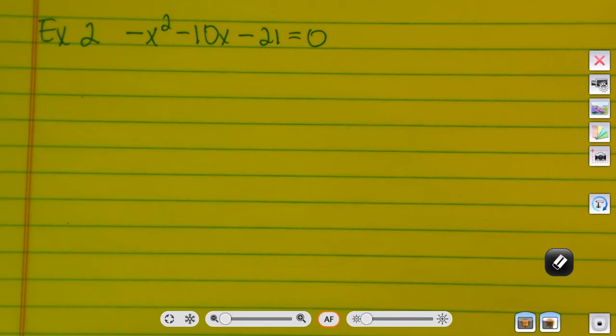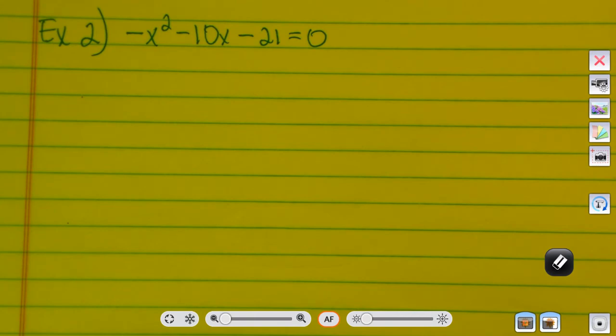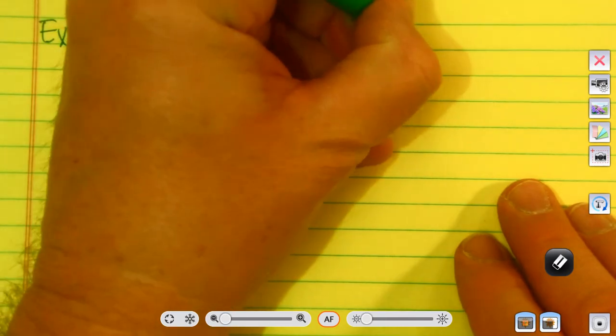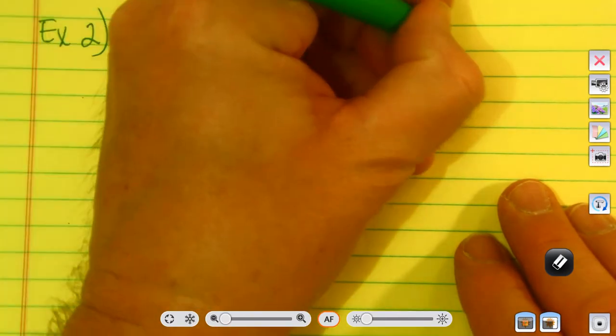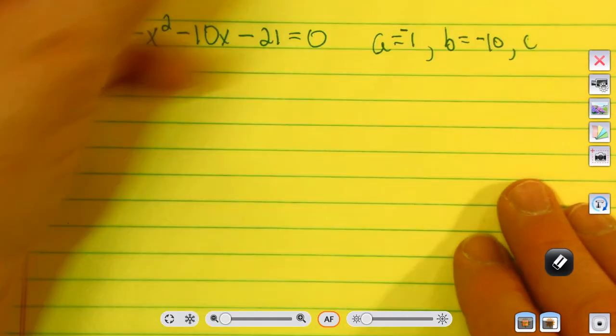Alright, so let's look at a second example. This one is negative x squared minus 10x, negative 21. So, a is equal to a negative 1, b is equal to a negative 10, and c is equal to a negative 21.